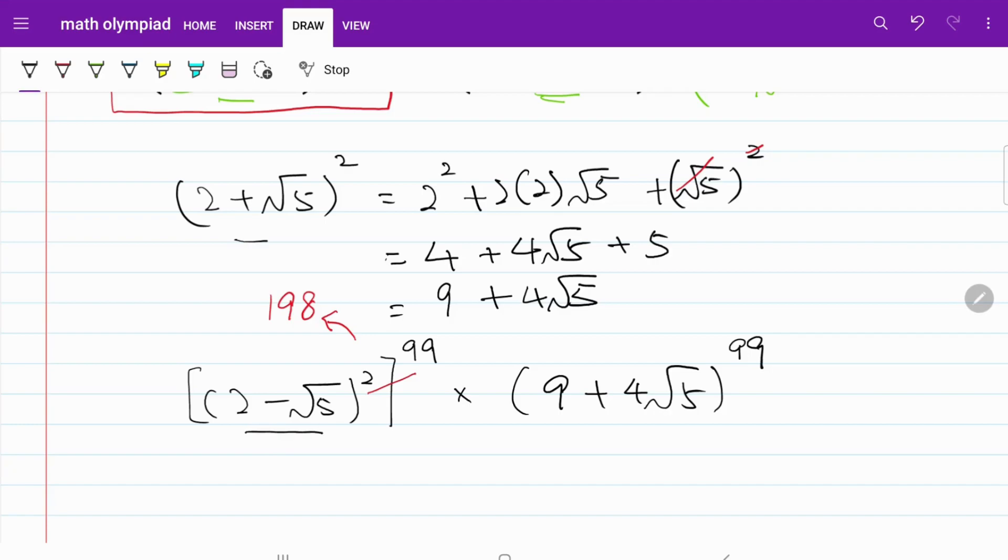2 minus square root of 5 square can also be written as 2 square minus 2 multiplied by 2 square root of 5 plus square root of 5 square. That's to the power of 99. And obviously the back part remains the same. 9 plus 4 square root of 5 to the power of 99.